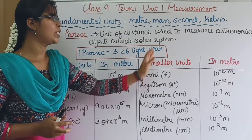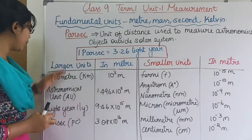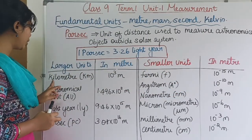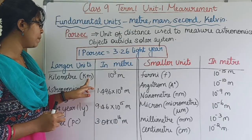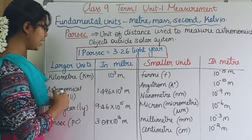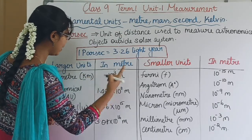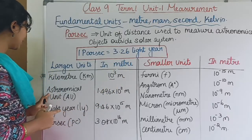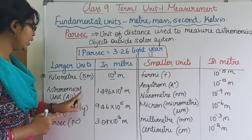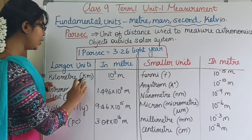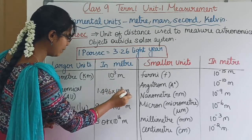The large units relative to 1 meter: 1 kilometer, symbol km, is equal to 10 power 3 meters. Astronomical Unit, symbol AU, has a value of 1.496 × 10 power 11 meters.